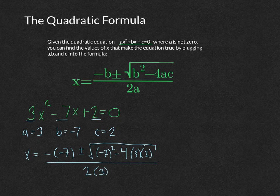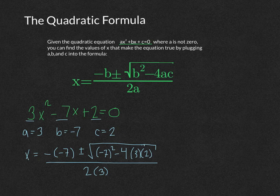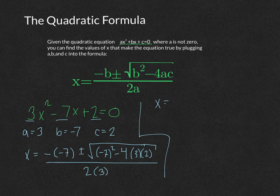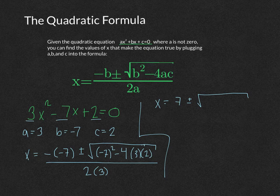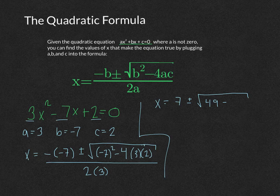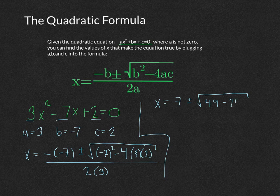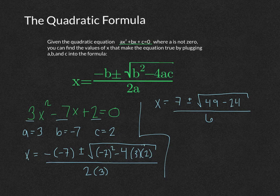Once we have all of the values plugged into the quadratic equation, we start to do some simplification. A negative negative 7 is a positive 7. Then we have plus or minus the square root of negative 7 squared would be 49. 4 times 3 times 2 is 4 times 6, so minus 24, all divided by 6, because 2 times 3 is 6.